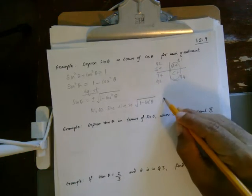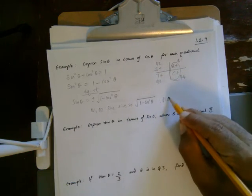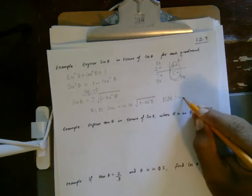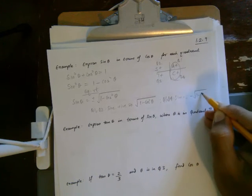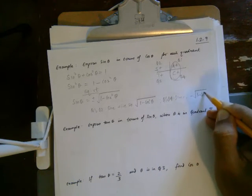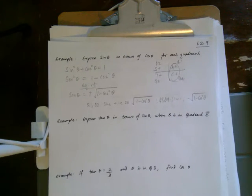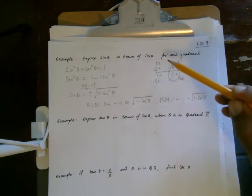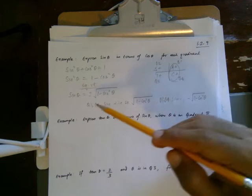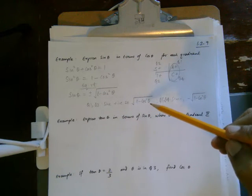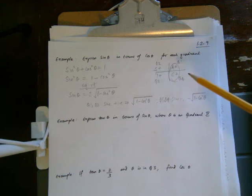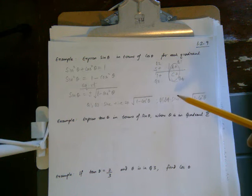In quadrant 3 and quadrant 4, sine is negative, so we take the negative square root. So in quadrant 1 and quadrant 2, sine theta equals positive square root of 1 minus cosine squared theta, and in quadrant 3 and quadrant 4, sine theta equals negative square root of 1 minus cosine squared theta.